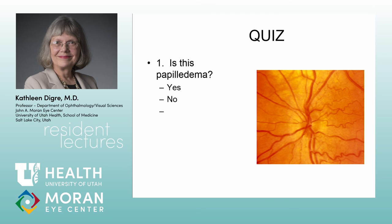Going through the answers: Question 1 — not papilledema. It's a cupless disc with anomalous vasculature in a patient with chronic stable headaches and no visual findings — just a 'little red disc,' a normal hyperemic cupless disc at risk for ischemic optic neuropathy. Question 2 — not papilledema. The disc looks like a football shape, anomalous vasculature with trifurcations, cupless. He had buried drusen. When you see football-shaped discs, get an ultrasound and look for drusen.